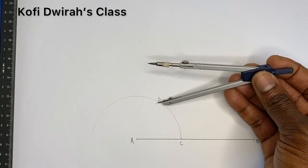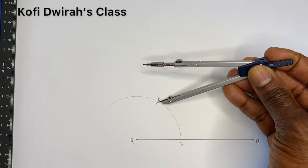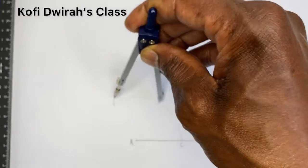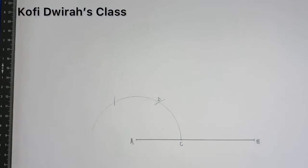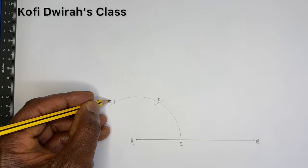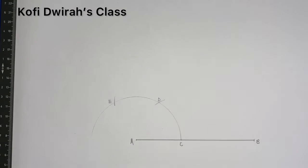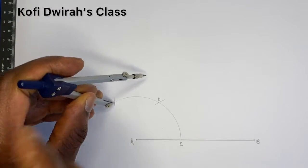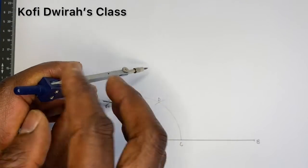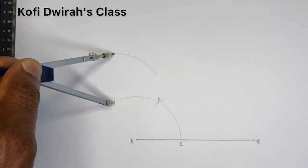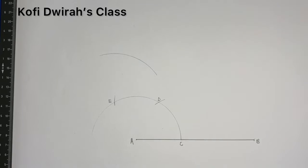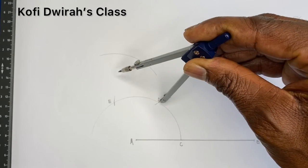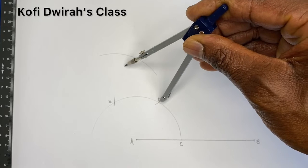At point C, you draw an arc to get point E. Then at point E, you open your compass to any radius and draw an arc to get point D. Then at point E, you open your compass to the same radius, and with the same radius at point D, you draw another arc.